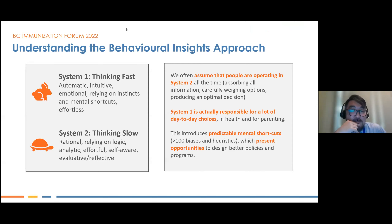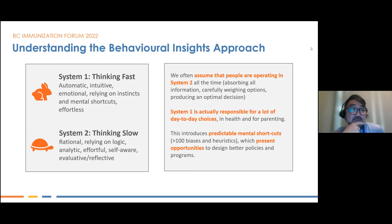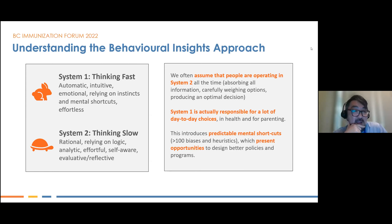Behavioral sciences have been around for almost four decades and have provided important findings about how humans think and make decisions. The most central finding is that we humans tend to have two different systems when we make decisions. This is based on research by Daniel Kahneman and his collaborators. System 1 is what we call 'thinking fast' — it is automatic, intuitive, relies on emotions and instincts, uses mental shortcuts, and is usually effortless.